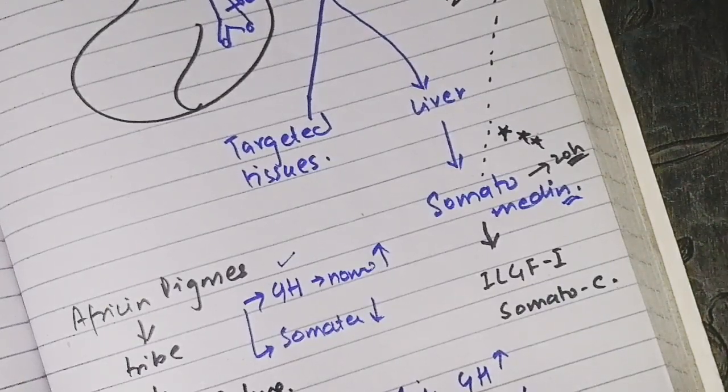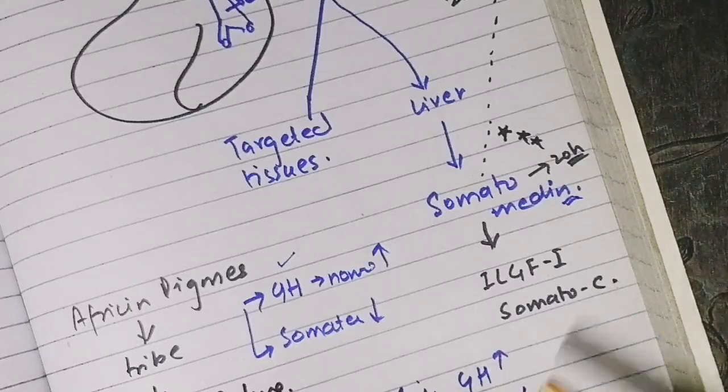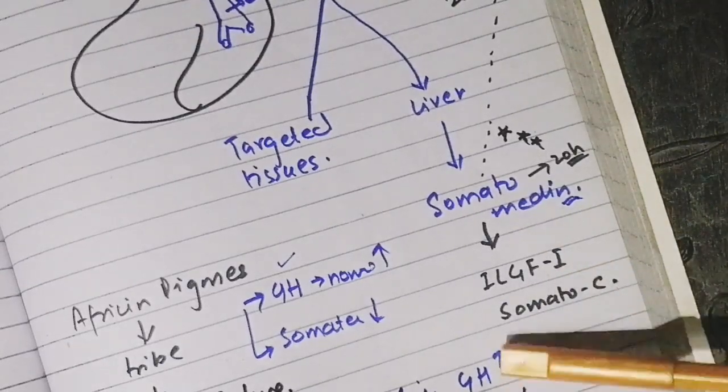Without adequate somatomedins, proper lengthening of the bones or the structural framework will not occur. But in the presence of somatomedins, all of that is made possible. We have discussed the factors that control somatomedin concentration, and there are two major factors that control growth hormone.